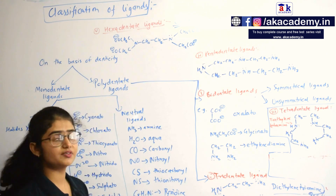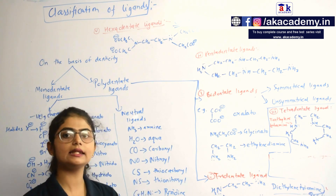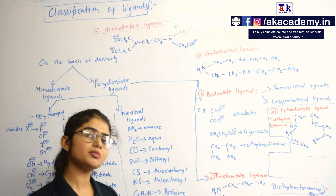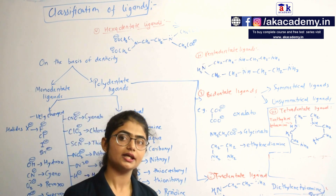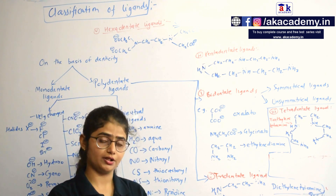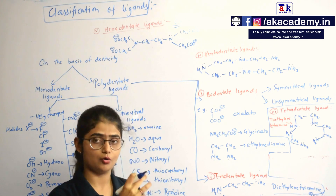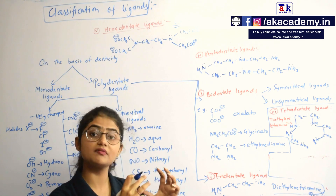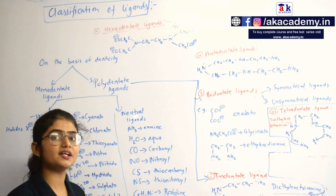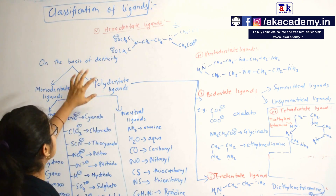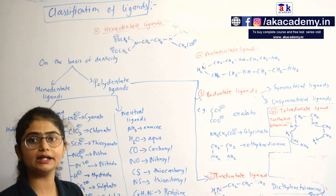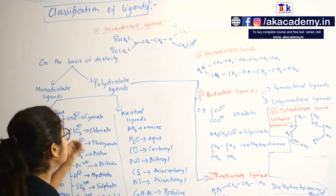So, classification of ligands. Ligands are mainly classified on the basis of denticity. Denticity means the number of attachments that a donor atom of a given ligand has towards the metal. On the basis of denticity, ligands are classified into two types: monodentate ligands and polydentate ligands.